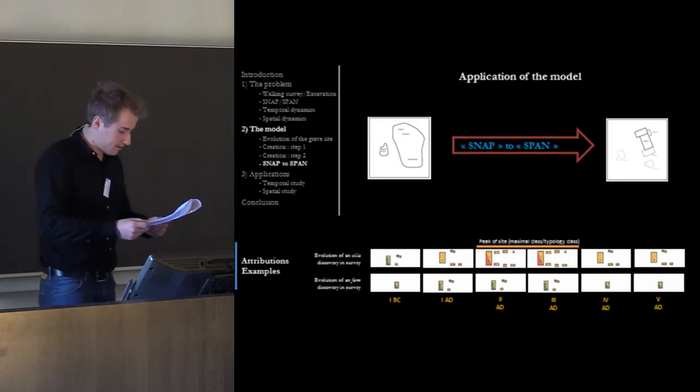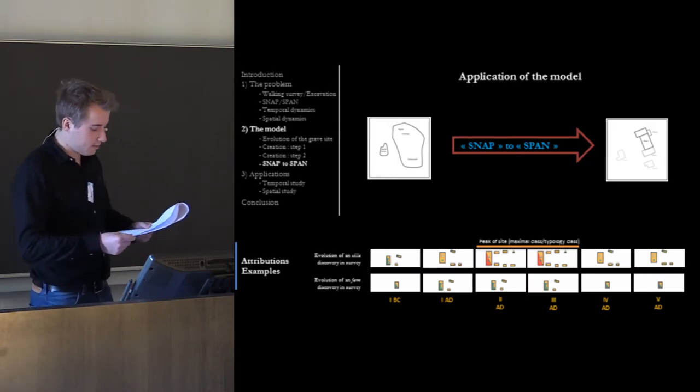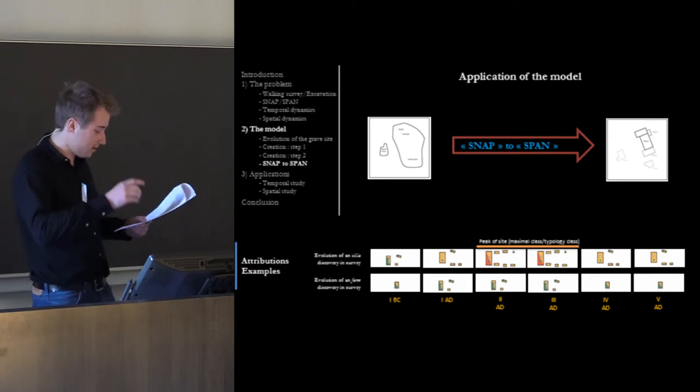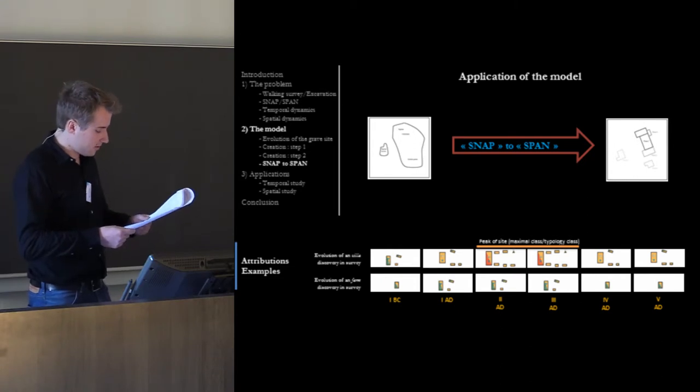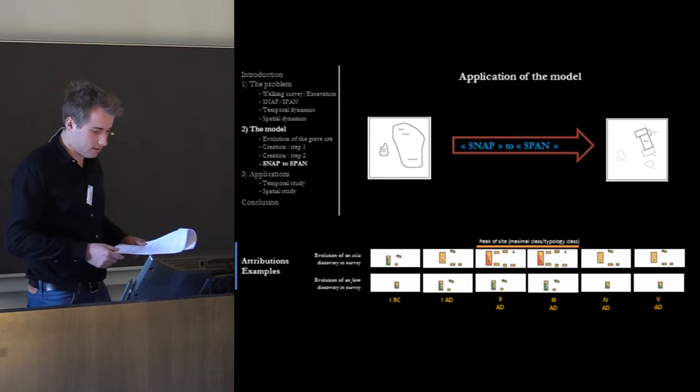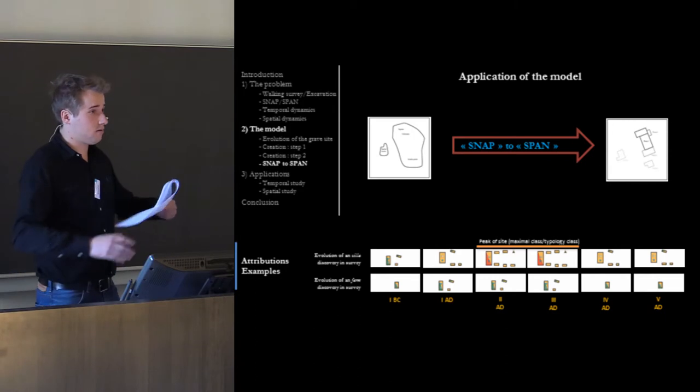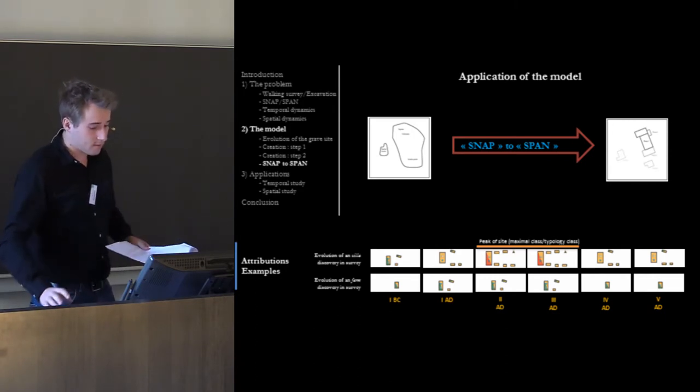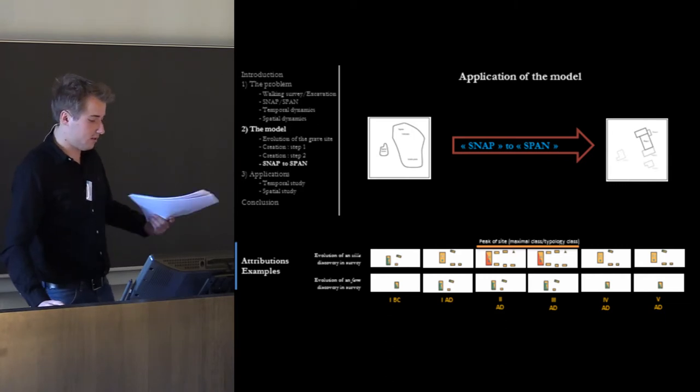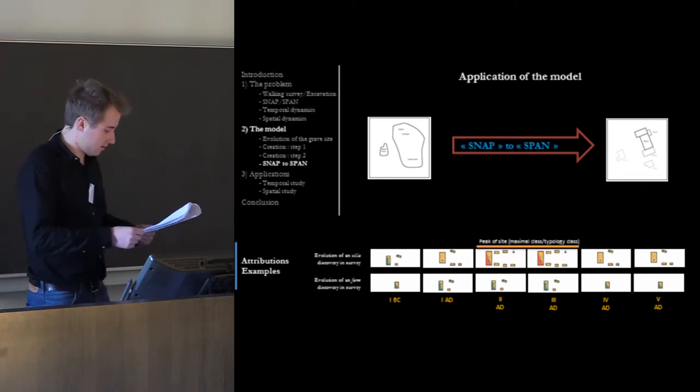Then, if we consider that sites discovered in prospecting show their optimal state, and if we consider that these occupations follow the same trajectory as the detailed sites - development, peak, then decline - we can restore with necessary caution the evolution according to the model which we established. For example, if we found in field survey a big villa, with the model we know that in the 1st century it's a little villa, and in the 1st century BC it's a farm.